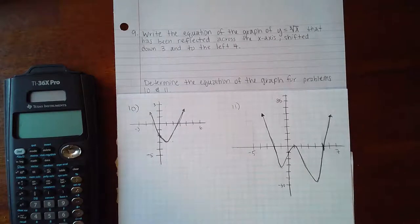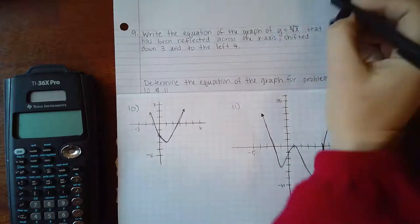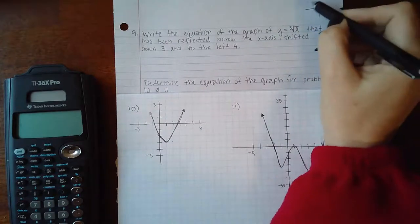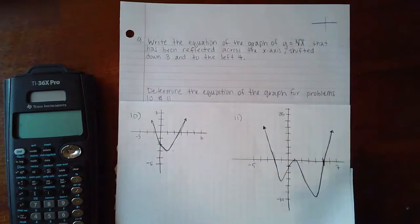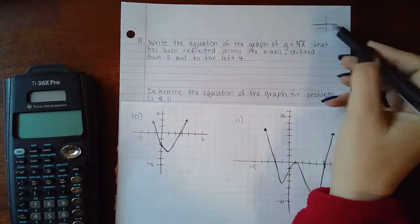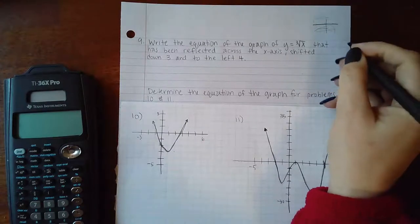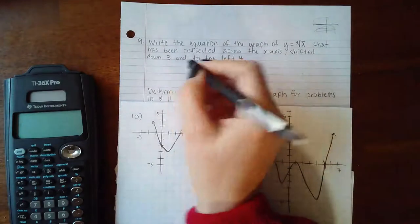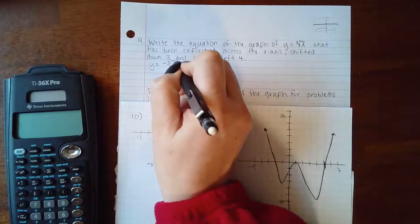Let's talk about reflection across the x-axis. Whatever was in the upper region will now reflect downward and be in the lower region, and vice versa. This means essentially you've changed the sign of the y value, so this causes there to be a negative outside the basic function.